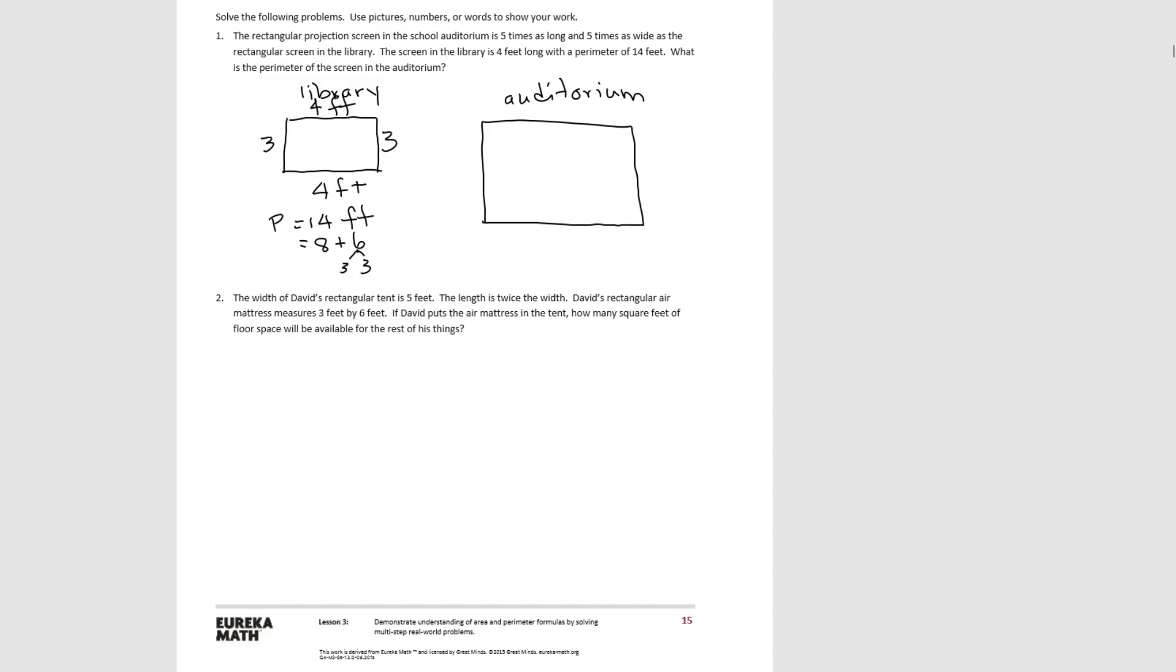Now we can use this to figure out the sides in the auditorium because it says that the auditorium is five times as long and five times as wide as the rectangular screen in the library. So for the width, 3 × 5 = 15, and for the length, 4 × 5 = 20. So to figure out perimeter, we can do 20 × 2 for each side and then 15 × 2 for the two other sides. Multiplying, we get 40 + 30 which is 70 feet. So the perimeter of the auditorium projection screen is 70 feet.